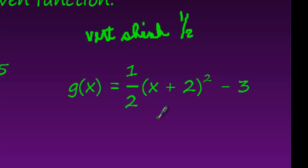The number inside here is a shift right or left. So this is positive. So it's a shift in the negative direction, actually. So this would be a shift left 2. And then this out here is a shift down, negative sign 3.